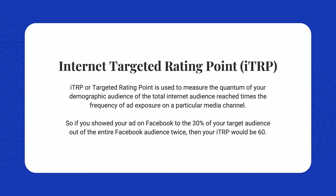Similarly, Internet Targeted Rating Point, or ITRP, is how you measure TRP for digital. It is used to measure the quantum of your demographic audience out of the total internet audience reached, times the frequency of ad exposure on a particular media channel. So if you showed your ad on Facebook to 30% of your target audience out of the entire Facebook audience twice, then your ITRP would be 60. And that brings me to the end of this video.